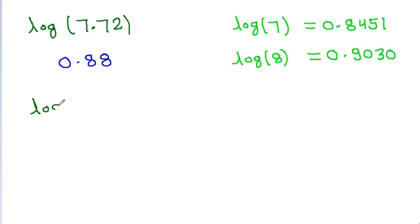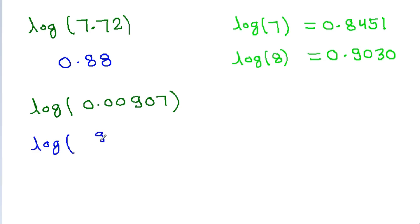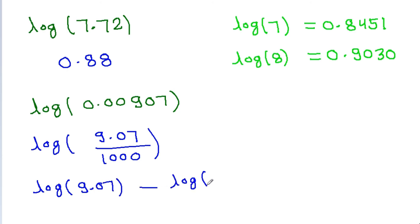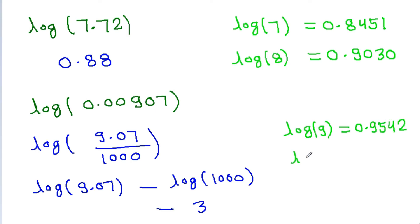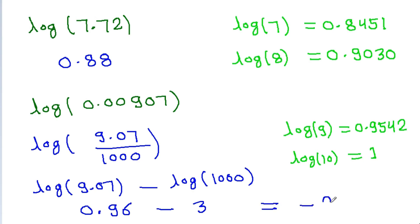If we have to find the value of log 0.00907, we write it as log 9.07 minus log 1000. Log 1000 is 3. We know log 9 is 0.9542 and log 10 is 1. Since 9.07 is close to 9, log 9.07 ≈ 0.96. So the answer is 0.96 minus 3 = −2.04.